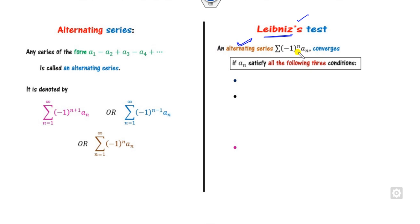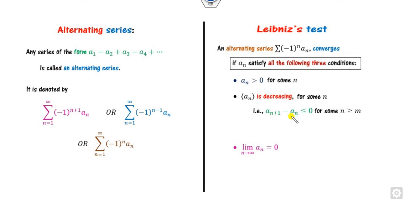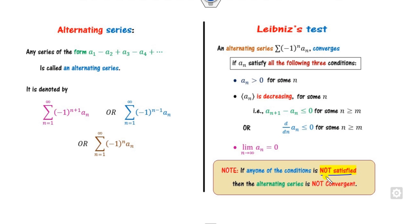Any alternating series is convergent if it satisfies three properties. First, a_n must be positive. Second, the sequence a_n must be decreasing. Third, the limit of a_n must be 0. When all three conditions are satisfied, we say the series is convergent by the Leibniz test. To prove decreasing, either show a_{n+1} minus a_n is less than 0 for n greater than some number, or take the derivative and show it is less than 0. If any one condition is violated, the series is not convergent.